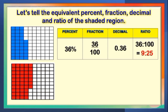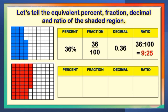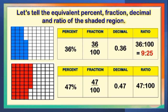Let us find out the equivalent percent of the shaded region for another example. That is equal to 47%. Fraction: 47 out of 100. Decimal: 0 and 47 hundredths. And the equivalent ratio is 47 is to 100.